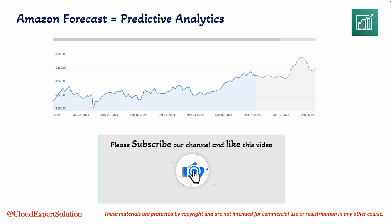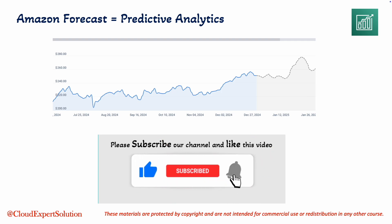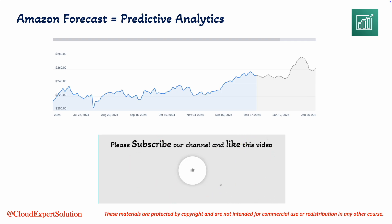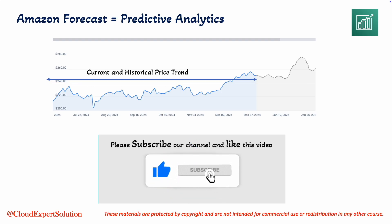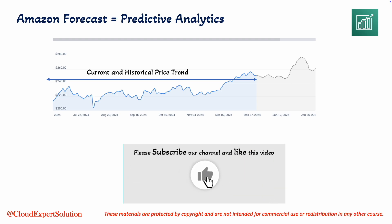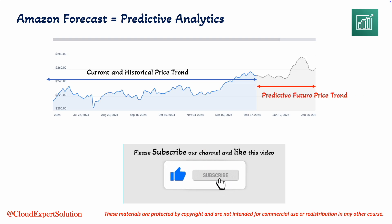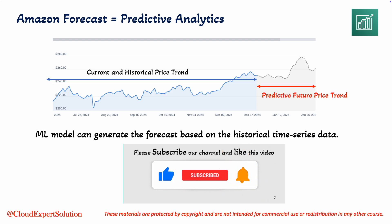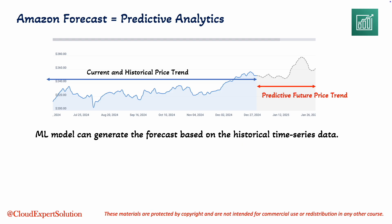Have you ever seen a time series graph like this? If you are familiar with stock market or investing, you might recognize it as a stock price prediction chart. What you are looking at here is an Apple stock chart. The blue section represents the current and historical price trends, while the gray section shows the predicted future trends. Using historical time series data, machine learning models analyze patterns and generate forecasts for the future. It's a powerful capability and not limited to the stock market.